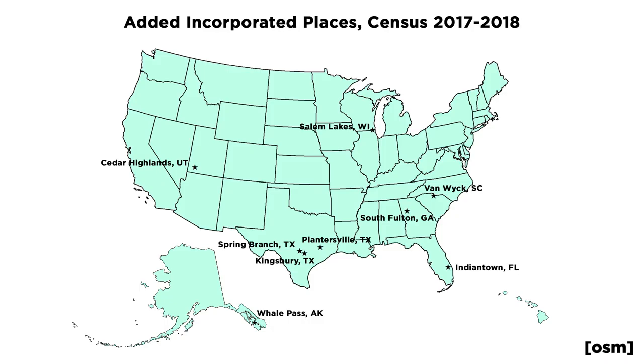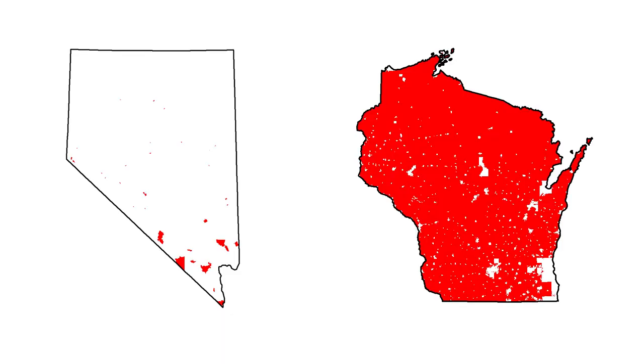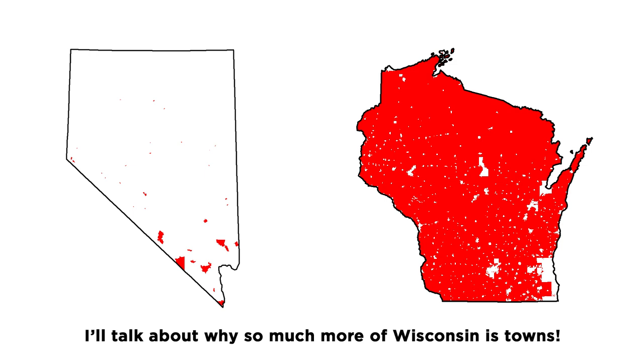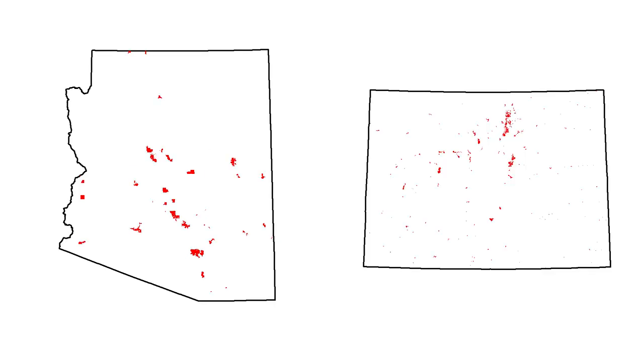And this is constantly happening across the country. The census added nine new incorporated places to its maps in its most recent annual release. This distinction between unincorporated and incorporated is important, because depending on the state, the label of city, town, village, or a few other terms can be based on whether the place is incorporated or not. For instance, in Nevada or my home state of Wisconsin, towns are unincorporated. In other states, like Arizona and Colorado, towns are incorporated.